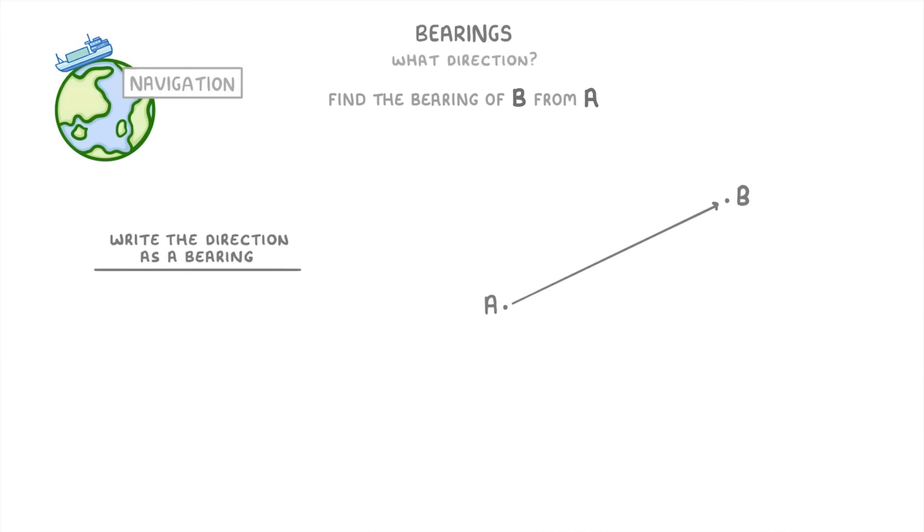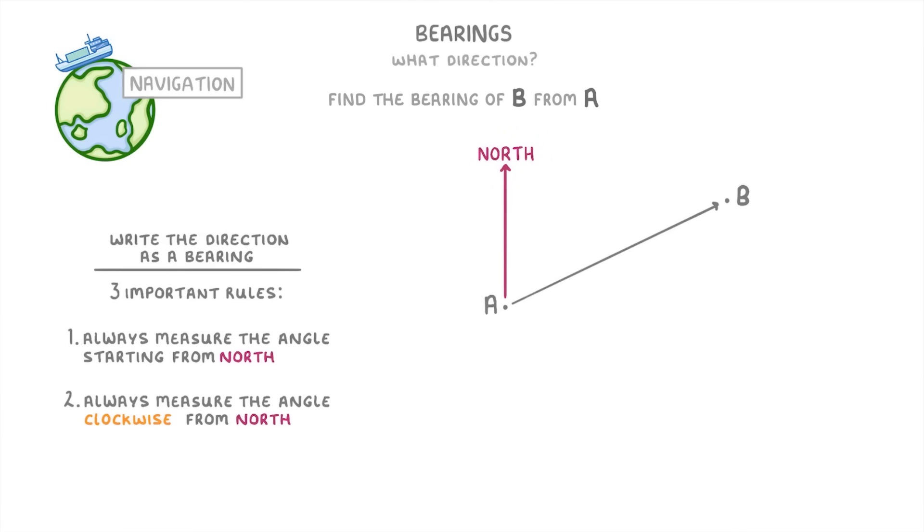Whenever you work with bearings, there are three important rules that you need to be aware of. The first rule is that we always measure the angle starting from north. So because in this question we want the bearing from A, we should add a north line to point A so that we know where to start the angle from. The second rule is that we always measure the angle clockwise from north.